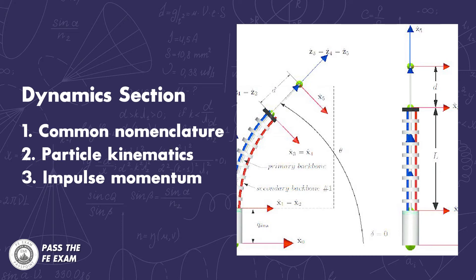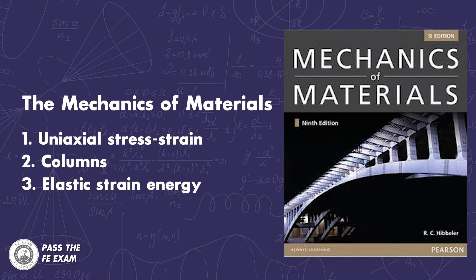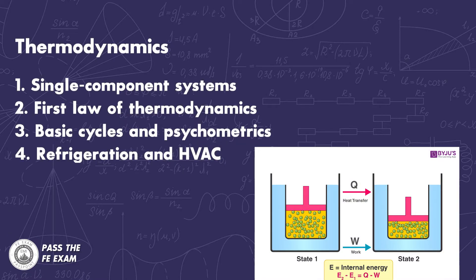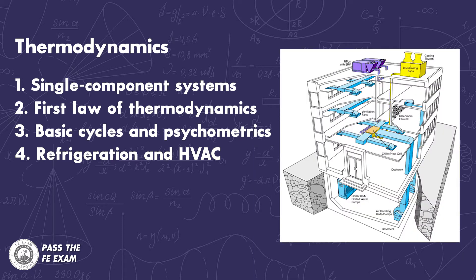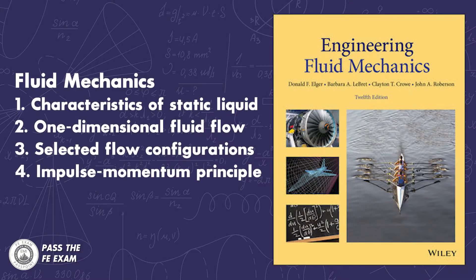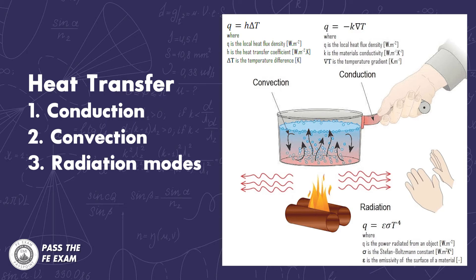Number eight, the dynamics section with information related to common nomenclature, particle kinematics, impulse momentum, and more. Number nine, the mechanics of materials section, covering items such as uniaxial stress-strain, columns, and elastic strain energy. Number ten, thermodynamics, with reference information related to the properties of single component systems, the first law of thermodynamics, basic cycles and psychometrics, as well as refrigeration and HVAC. Number eleven, fluid mechanics, covering characteristics of static liquid, principles of one-dimensional fluid flow, characteristics of selected flow configurations, and the impulse momentum principle. Number twelve, heat transfer, focusing on conduction, convection, and radiation models.